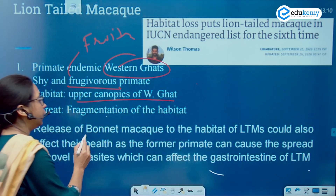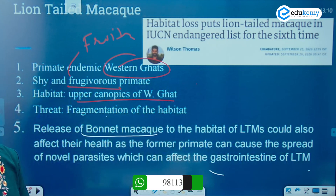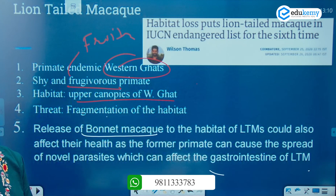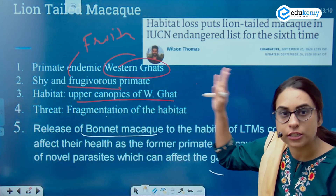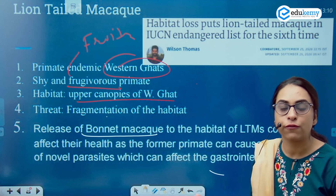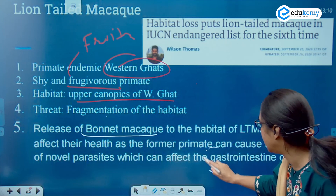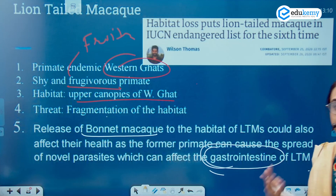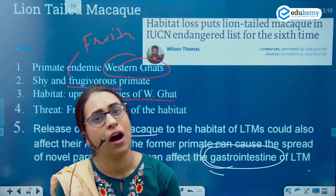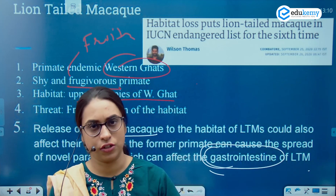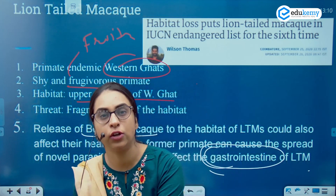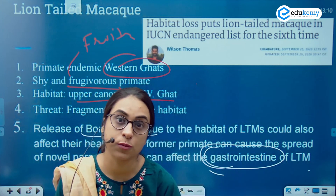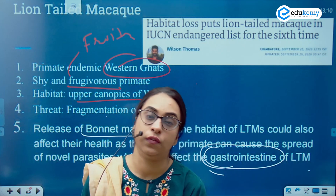Why did I show you the image of the bonnet macaque? Because the introduction of the bonnet macaque into the habitat of the lion tail macaque has created a new problem — this species is now suffering from a gastrointestinal parasite, affecting its health. So UPSC can ask questions like: what is the nature of the species, whether the introduction of bonnet macaque is helping or is a threat, what are the threats to the species, and what is the IUCN status.